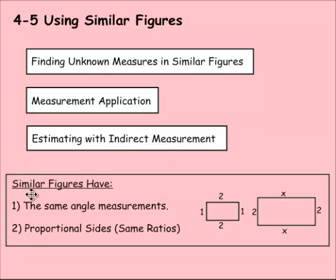Just a reminder from last lesson: similar figures have the same angle measurements—here they're all 90 degrees in both shapes—and they have proportional sides, meaning the ratios are the same. Here the short side is twice as long as this short side, so the long side will be twice as long as this long side, so twice of 2 would be 4. I can solve these angles because I know these shapes are similar.